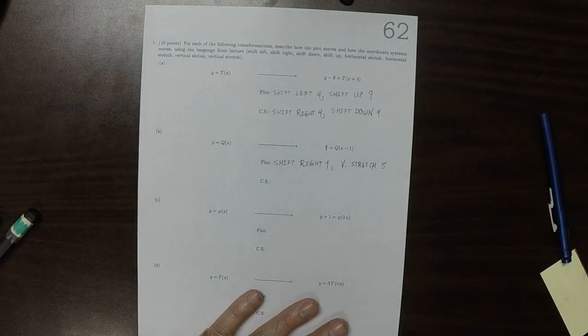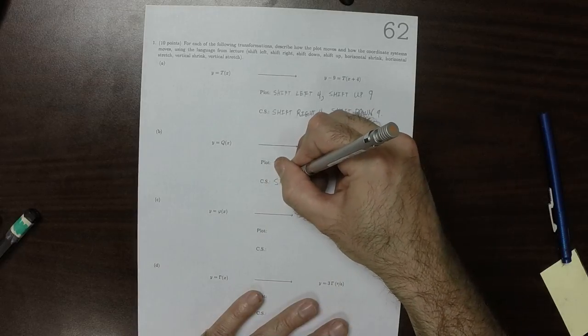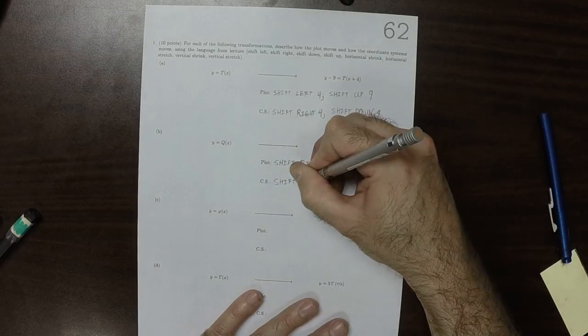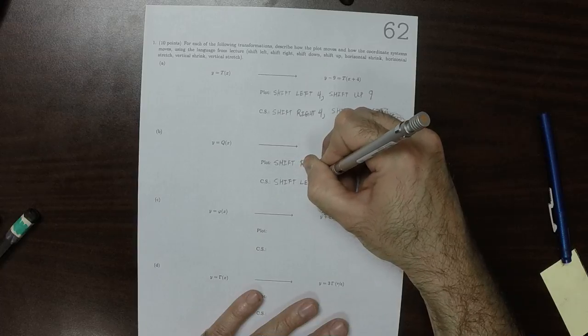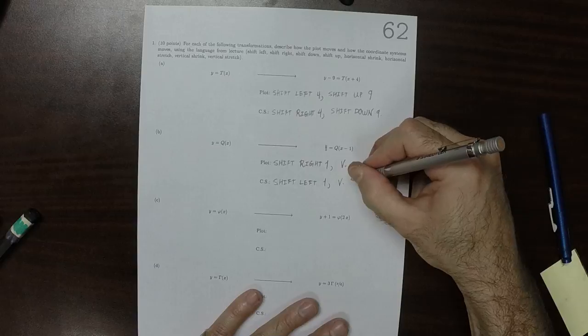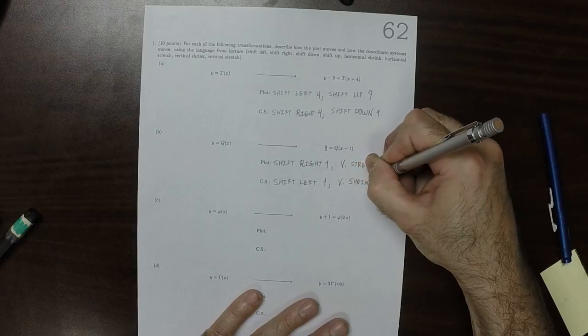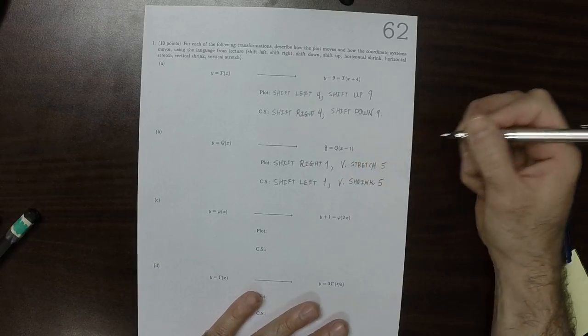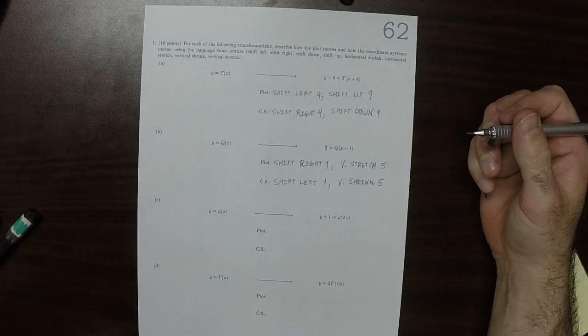The coordinate system, on the other hand, is going to shift left 1 and it's going to undergo a vertical shrink by a factor of 5.